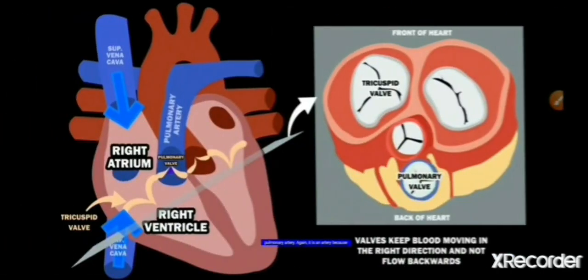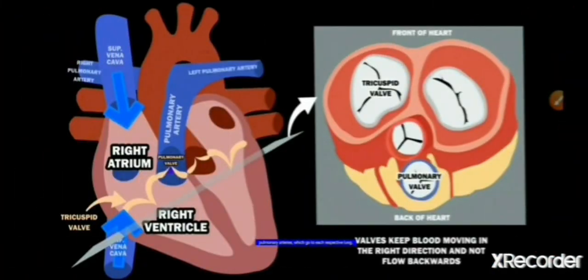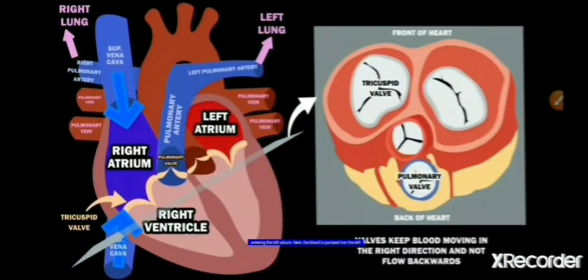The blood is then forced to enter into the pulmonary artery. The pulmonary artery is guarded by the pulmonary valve, which closes as the blood enters the pulmonary artery. From the pulmonary artery, blood enters into the lungs. We can see the blood entering the right and left lungs via the right pulmonary artery and left pulmonary artery branches. From the lungs, the purified oxygenated blood enters into the left atrium through the pulmonary veins, with branches of pulmonary veins entering into the left atrium.